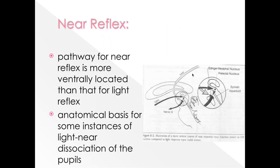An important anatomical point is that the near reflex pathway is located more ventrally compared to the light reflex pathway. This means dorsal lesions will affect the light reflex more while sparing the near reflex, producing light-near dissociation of the pupil. Any lesion located more dorsally will affect the light reflex while leaving the near reflex intact.